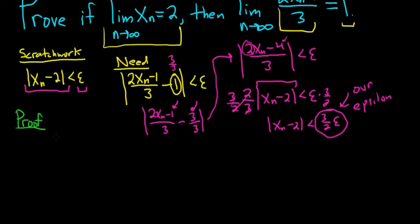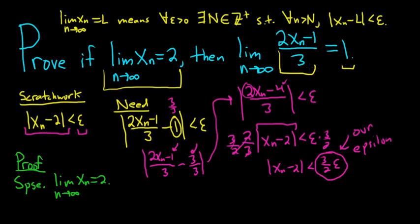So we start our proof by assuming that this sequence converges to 2. So I'll write it again. Let's do a formal proof. So suppose that the limit as n approaches infinity of x_n is equal to 2. That's what we assume. Now we have to prove that this other sequence here is equal to 1. So to start that, we have to start by letting epsilon be greater than 0. So we have to write that down. So let epsilon be greater than 0.